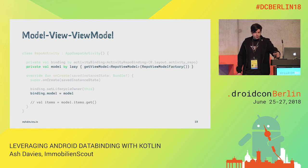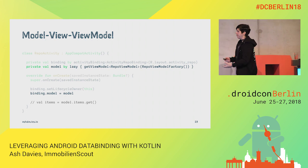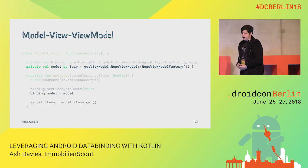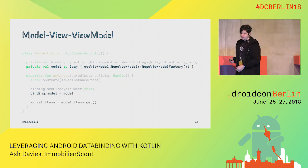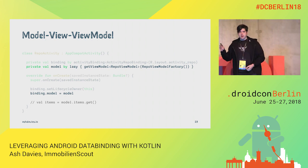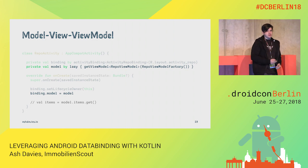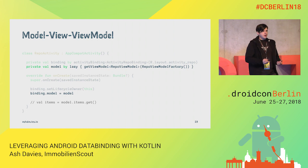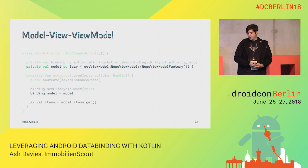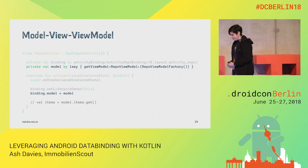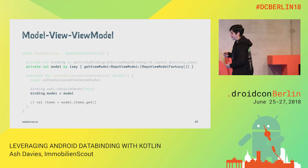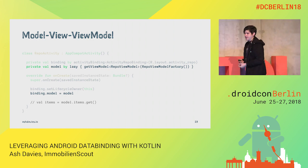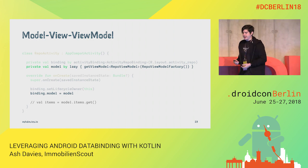Additionally, if you want to access a property on your model later on or in another place in your activity, you can use the lazy delegate property to instantiate the view model and then assign that to the binding. You can then access it later without having to worry about the nullability of your binding model, since the generated code will have nullable annotations.